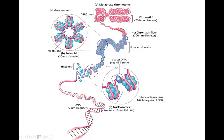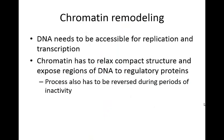As this gets looped further and further, we're going to have actual chromatin fibers. Looking at it all together, we have two sister chromatids — this is what the chromosomes would look like during metaphase, where the chromosomes are duplicated. Although DNA is tightly packaged in chromatin in association with the different histones, DNA needs to be accessible for replication and for transcription. Therefore, chromatin has to be able to relax this compact structure and expose regions of DNA to different regulatory proteins. This process also needs to be reversible during periods of inactivity so that you can package it back up when it's not needed.